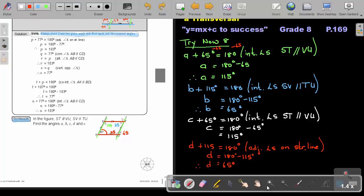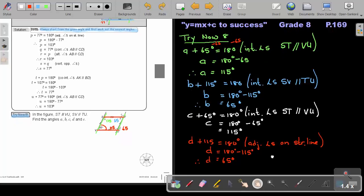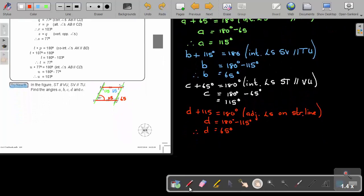Now to find the value of E, I will do exactly the same as this one. So if I want to find the value of E, do you see E? It's again a straight line, that green straight line. So E plus the 65 will be equal to 180. And the reason is the same as this one, so it's the adjacent angles on a straight line.